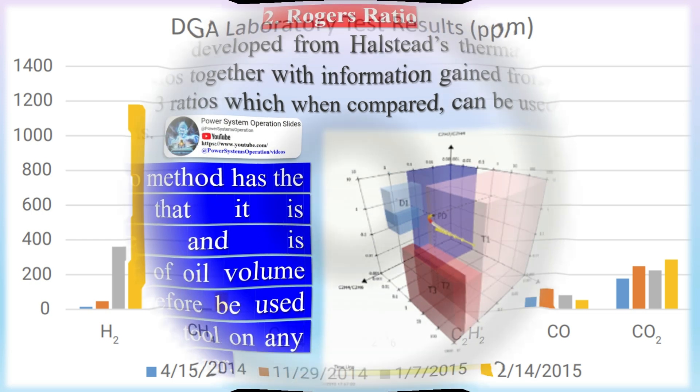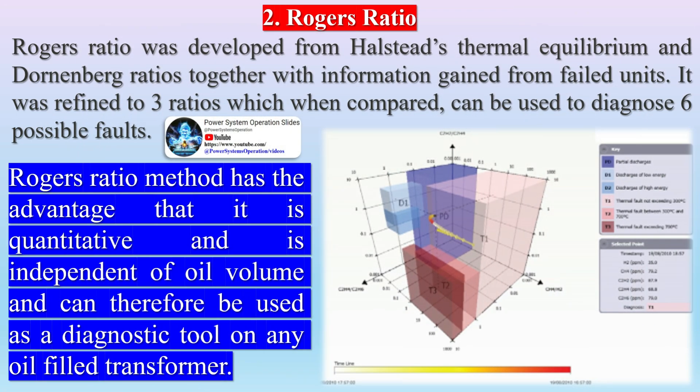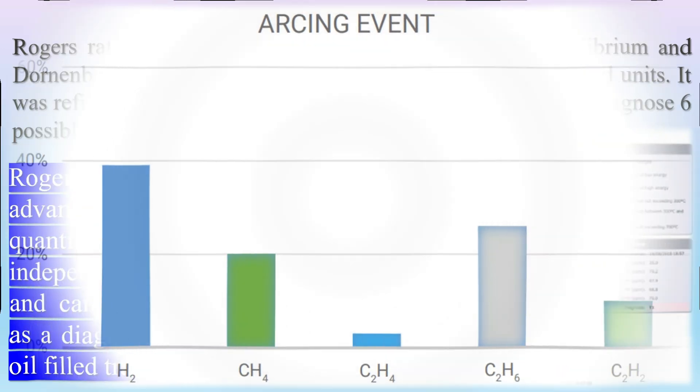The six main fault zones are represented along with a DT zone indicating a thermal and electrical fault. The fault zones have been determined based upon a large sample of faulty transformer cases which have subsequently been inspected visually. This is a useful technique but is limited to detecting fault conditions when they have already formed, allowing a progression of an issue to be followed.